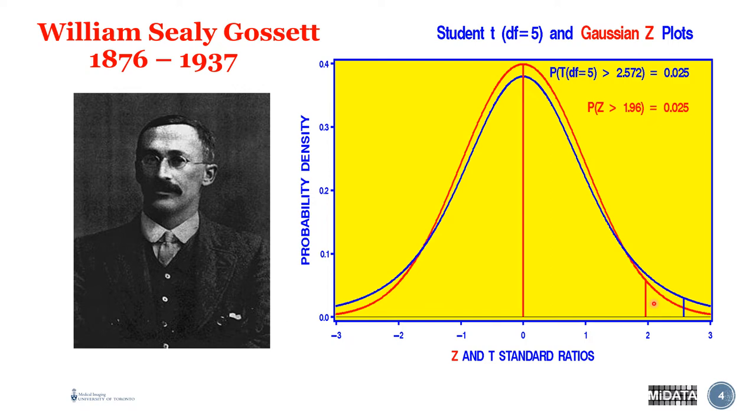He wanted to work with small sample sizes, because in his work at Guinness, he just couldn't justify sampling very large samples all the time to get an estimate, as well as he realized he doesn't know the theoretical value of the variance of the population. So what he did is he derived what's now called the student T. He had to publish his work under student, because he was working for Guinness, and he didn't want Guinness to know he was publishing his work.